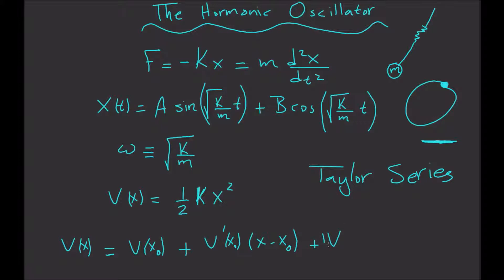One-half times the second derivative at that point, the value of that second derivative at that point, times (x minus x₀) squared, and then higher order terms.